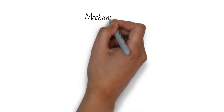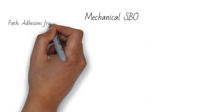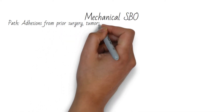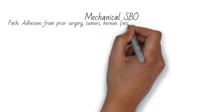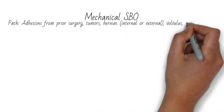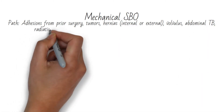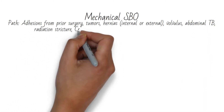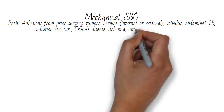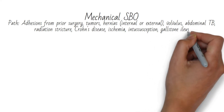Starting with mechanical obstruction: the most common cause is adhesions from prior surgery. In a virgin abdomen, the most common cause is tumor. Other causes include inflammatory adhesions, internal or mesenteric hernias, external hernias, volvulus, Crohn's disease strictures, gallstone ileus, and in children, intussusception.